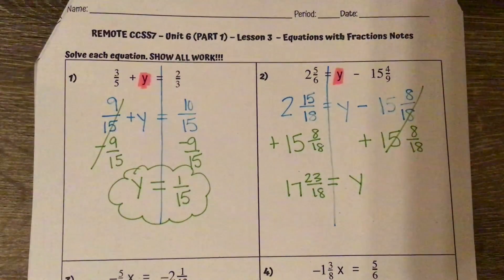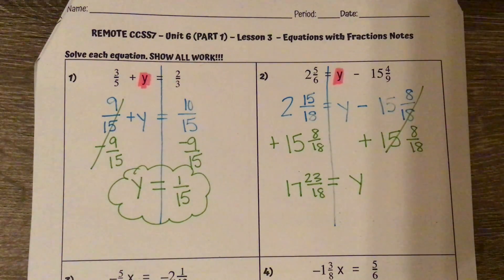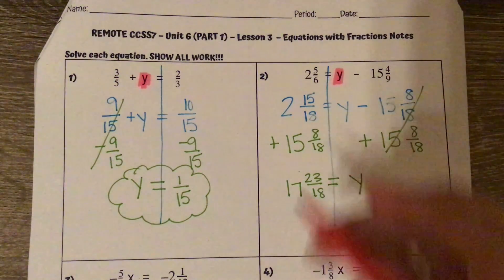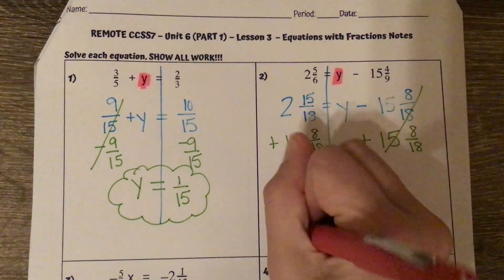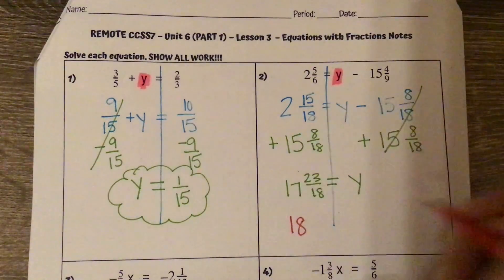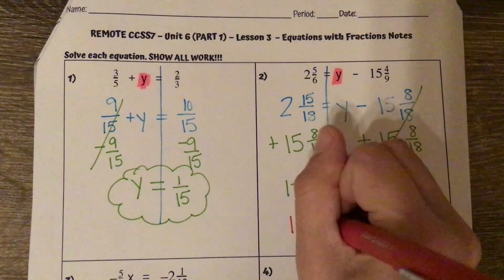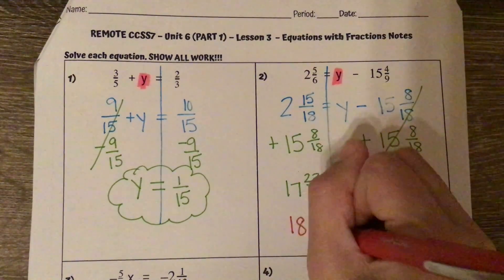But that is an improper fraction. So we add 1 to our 17 to make it 18, and we have 5 left over.